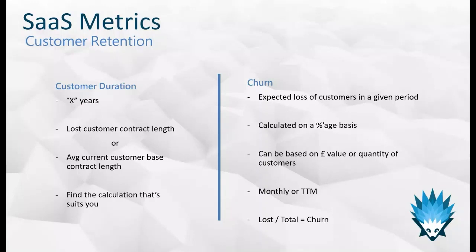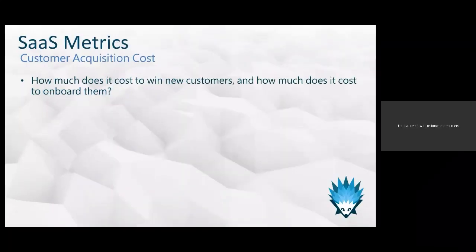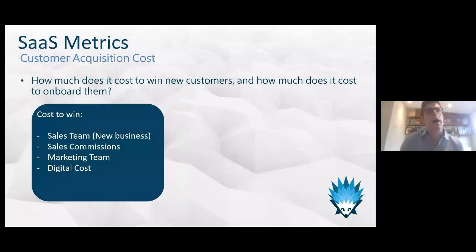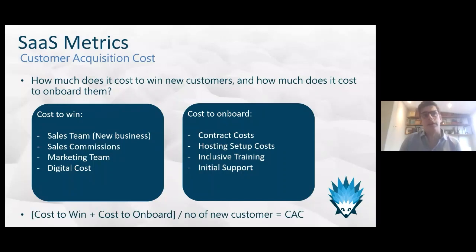Finally, we have Customer Acquisition Cost (CAC), which shows how much it costs to onboard a new customer and get them signed up to your product. There are two key halves: the cost to win — your total sales team costs, commissions, and marketing costs — and the cost to actually onboard them, including contract signing, any hosting setup costs, and whether you offer inclusive free training or initial free support.